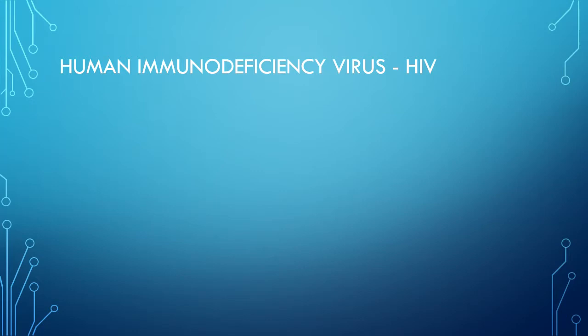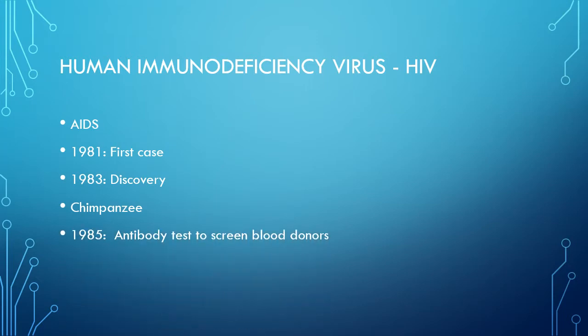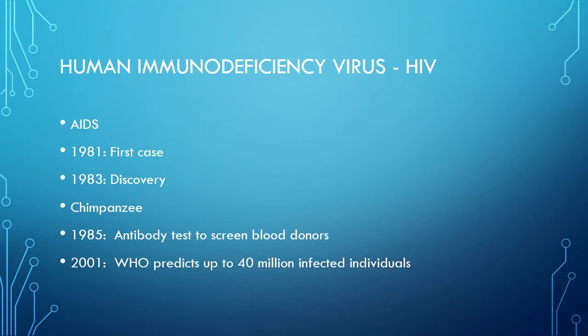HIV, Human Immunodeficiency Virus, is the etiological agent of AIDS — Acquired Immunodeficiency Syndrome — which is the biggest threat to mankind in the last three decades. The first case of AIDS was described from New York in 1981, followed by the discovery of HIV from the Pasteur Institute in Paris in 1983. HIV in humans was believed to be acquired from chimpanzee by cross-species infection of the simian counterpart of HIV in rural Africa. In 1985, the antibody test to screen blood donors was developed, and in 2001 WHO predicted up to 40 million infected individuals.